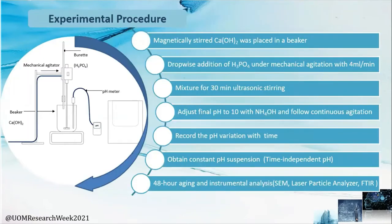Our experimental procedure was: we first dissolved calcium hydroxide in solution, then added dropwise orthophosphoric acid, then put our mixture through 30-minute ultrasonic stirring, then adjusted the final pH to 10 with ammonium hydroxide. Most importantly, we recorded the pH variation with time and obtained a time-independent pH constant. After 48-hour aging, we did instrumental analysis including laser particle analysis and FTIR.